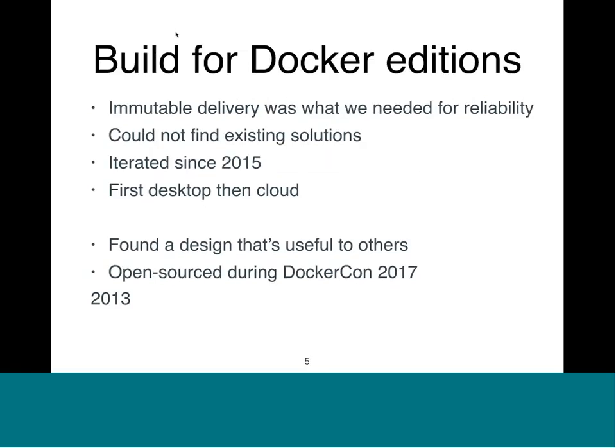We initially started looking at building our own Linux systems because we were working on Docker for Mac and then Docker for Windows. What we wanted there is basically a desktop application where, if you restart your Docker for Mac or Docker for Windows, it comes back up in a known good state. We didn't want anything in the Linux subsystem to be changing because it makes it really hard to debug. So we basically needed some form of immutable delivery for reliability.